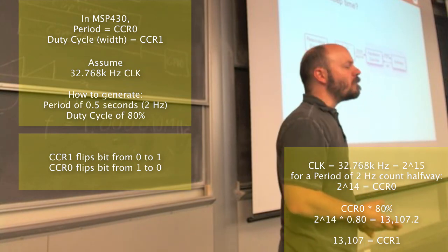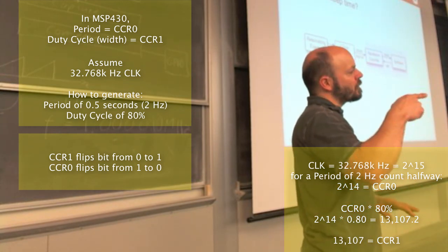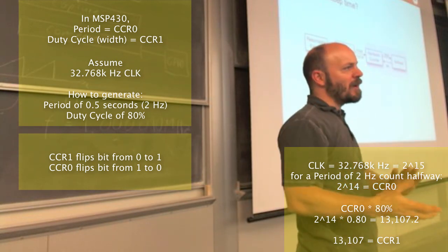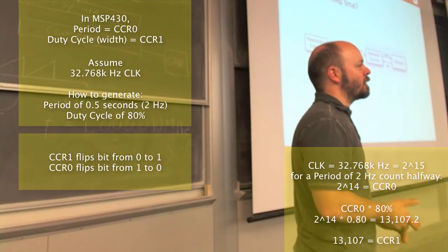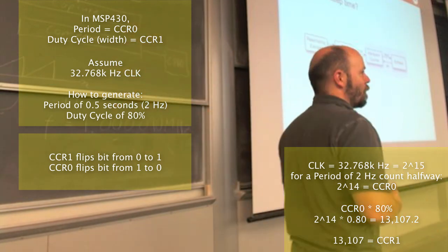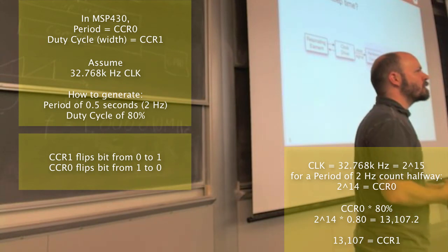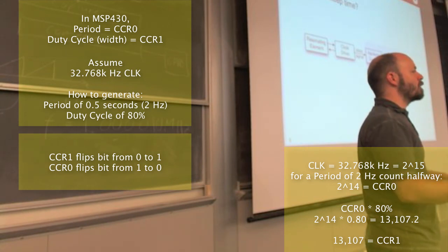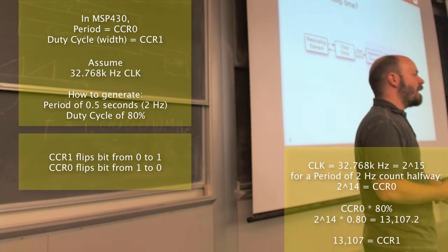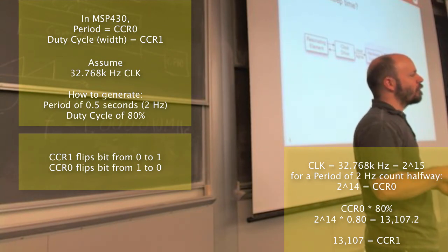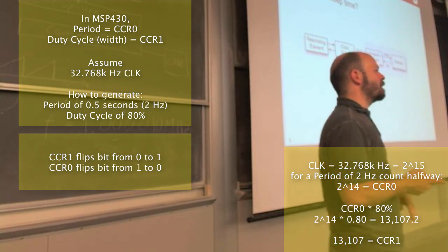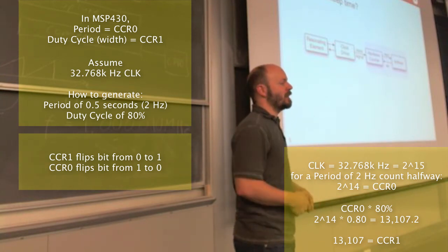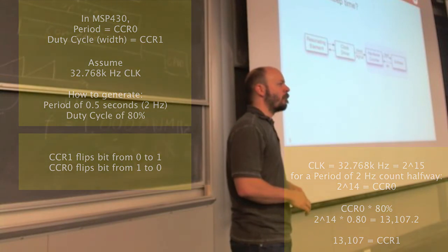CCR1 flips the bit from 0 to 1, and when the counter hits CCR0 it flips from 1 to 0. This nomenclature is from the MSP430's timers. Note that SmartFusion timers cannot generate PWM signals via GPIO directly because there's no GPIO unit connected to them — they have their own dedicated PWM units. In lab 5, you'll actually implement your own timer and flip a bit accordingly to generate a PWM signal.